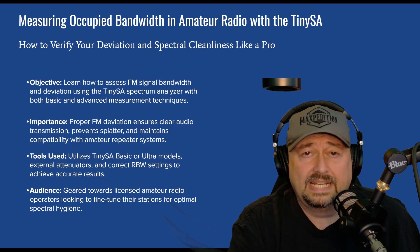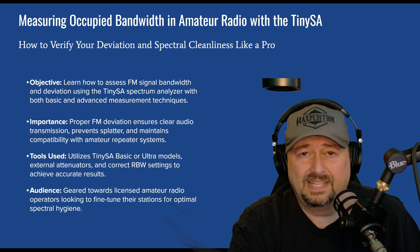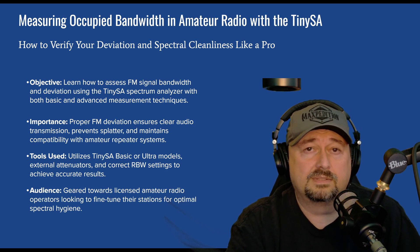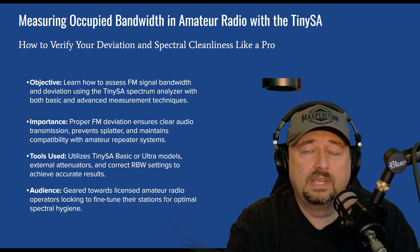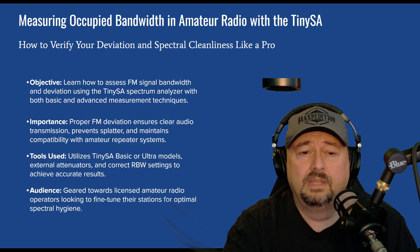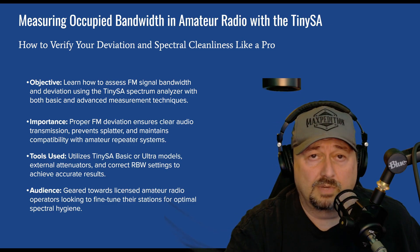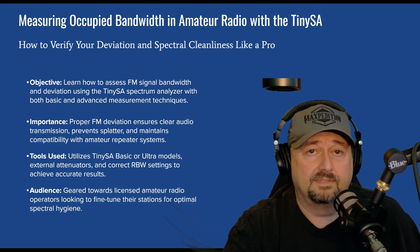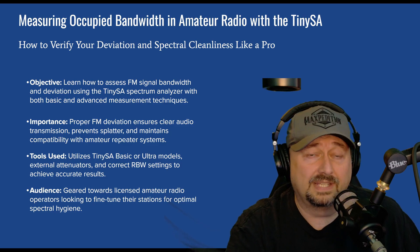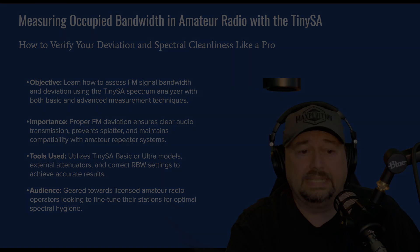We can use a TinySA, TinySA Ultra, or TinySA Ultra Plus — there are about five different TinySA models available now, and all of them have the ability to do this. We're really talking about this from an amateur radio perspective, but the same holds true if you're measuring other types of signals like FRS, GMRS, Citizen Band, or the like.